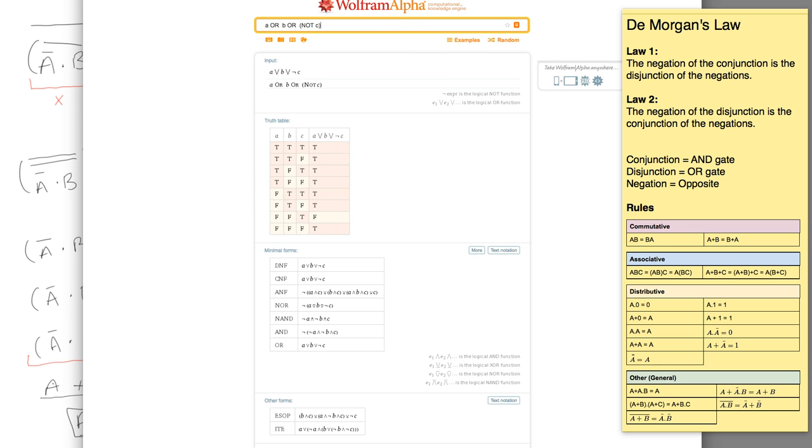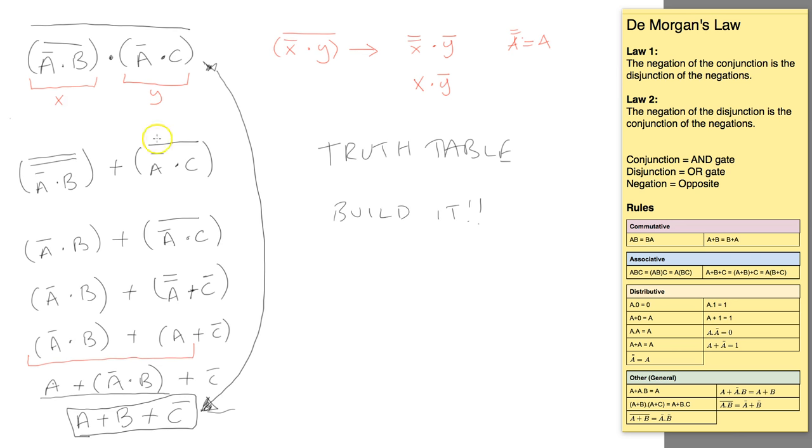So the two tables perfectly match, and that means that our method of breaking things down, looking for patterns works. If you use this kind of method when you're doing your own simplification, you'll find success more often than not.